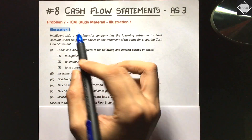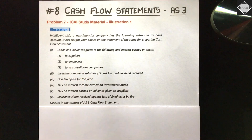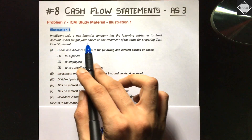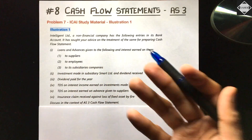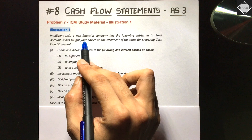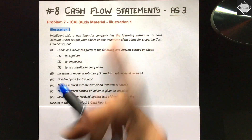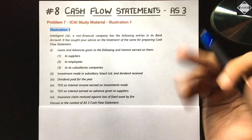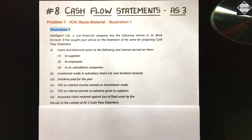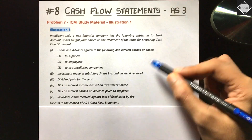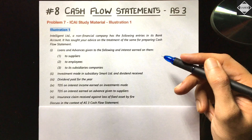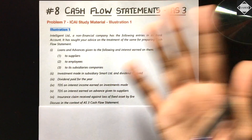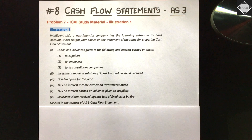Let's begin with Problem 7, from the ICAI study material — Illustration 1, Intelligent Limited. The question states that Intelligent Limited, a non-financial company, has the following entries in its bank account and has sought advice on their treatment for preparing the cash flow statement. Even if the question hadn't specified, we always assume a non-financial company unless it explicitly states otherwise.